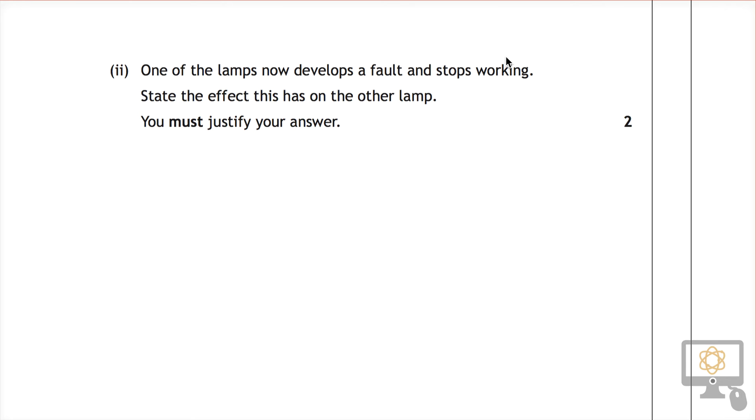Okay, so we're going to be looking at question 1b part 2 from the 2014 National 5 Physics paper. And it starts by saying one of the lamps now develops a fault and stops working. What effect this has on the other lamp? And you must justify your answer. So it's worth two marks.